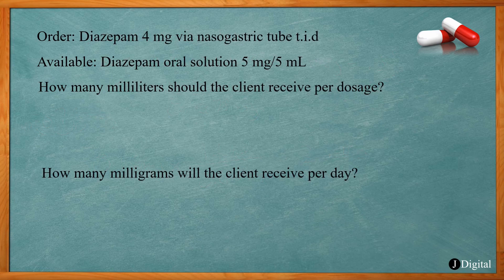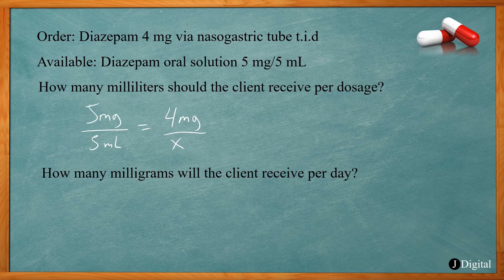In this problem we're ordering diazepam 4 milligrams via nasogastric tube TID — that's three times a day. We have available diazepam oral solution 5 milligrams per 5 milliliters. To solve this we set up a proportion: 5 milligrams per 5 milliliters equals 4 milligrams per x milliliters. From there we cross multiply and solve for the unknown.